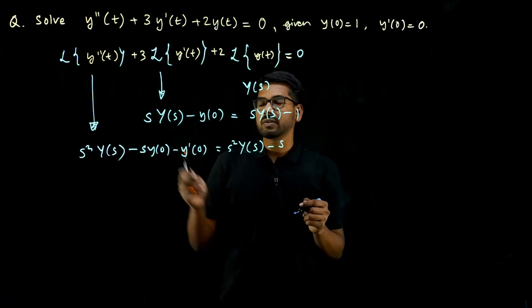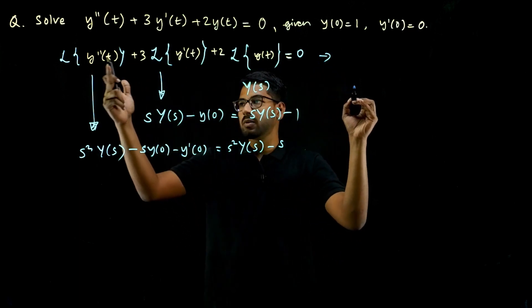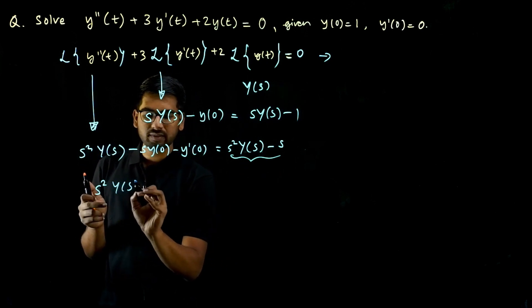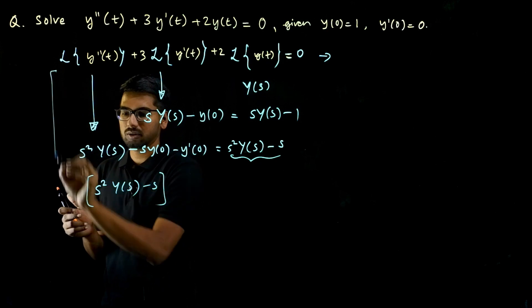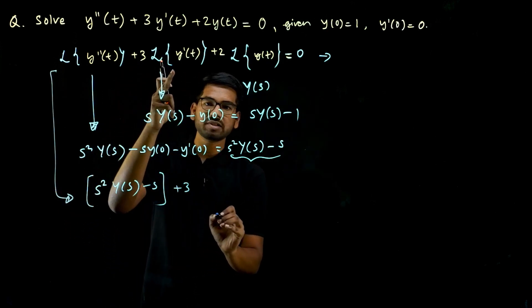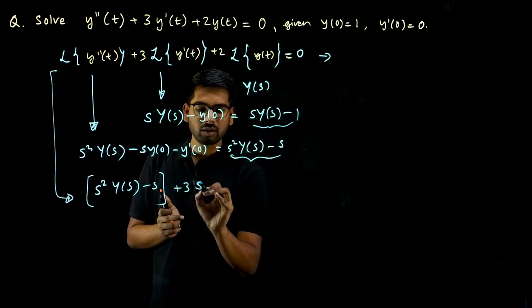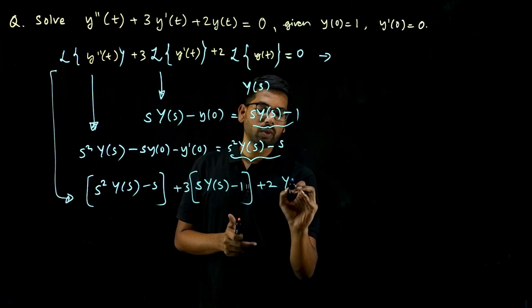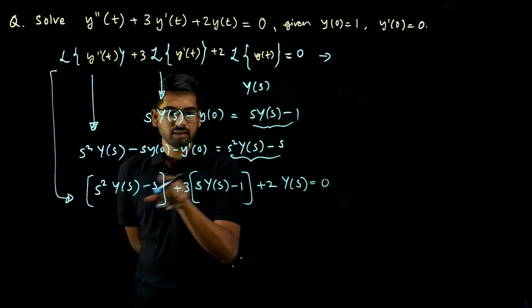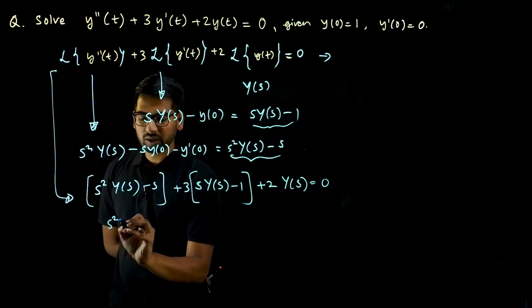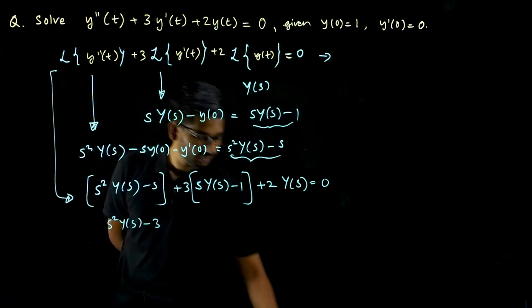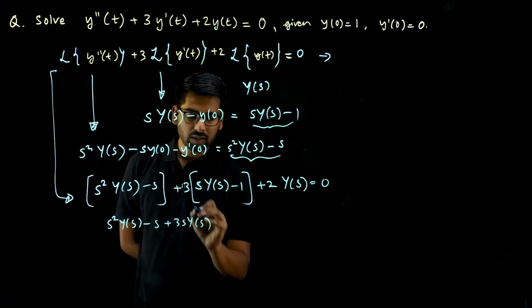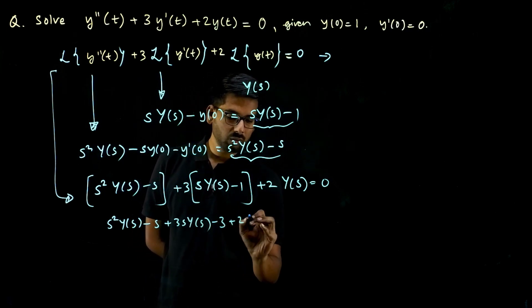So the Laplace transform of the full differential equation becomes: [S²·Y(s) − S] + 3·[S·Y(s) − 1] + 2·Y(s) = 0. Opening the brackets: S²·Y(s) − S + 3S·Y(s) − 3 + 2·Y(s) = 0.